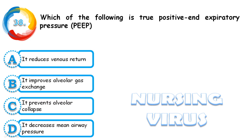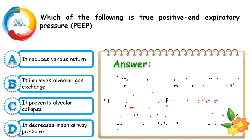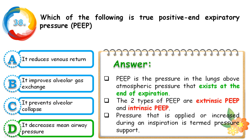Question 38: Which of the following is true about positive end expiratory pressure (PEEP)? Options are: it reduces venous retention; it improves alveolar gas exchange; it prevents alveolar collapse; or it reduces mean airway pressure. The correct answer is D — it decreases mean airway pressure. PEEP is the pressure in the lungs above atmospheric pressure that exists at the end of expiration. There are two types: extrinsic PEEP and intrinsic PEEP.